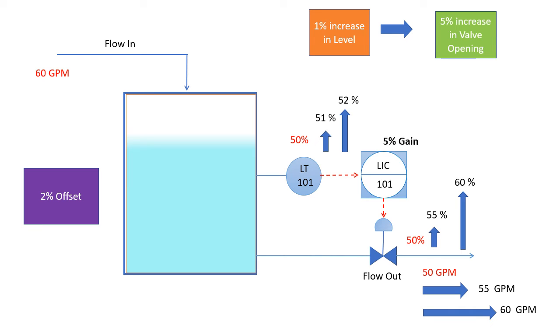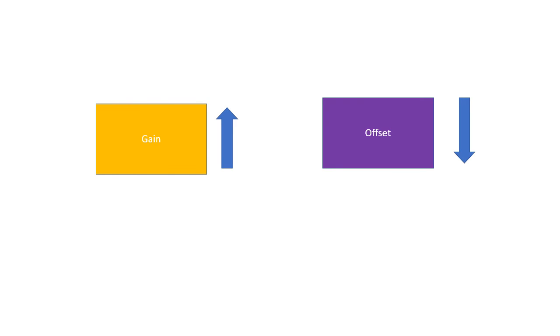So as we have increased the gain, we are getting reduction in the offset value, but we cannot make it zero.